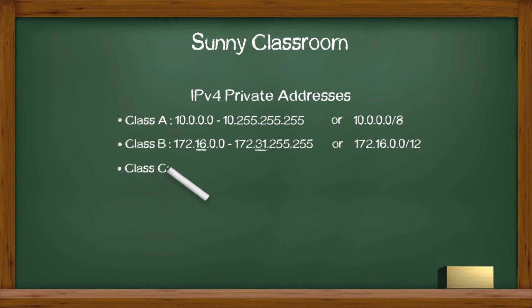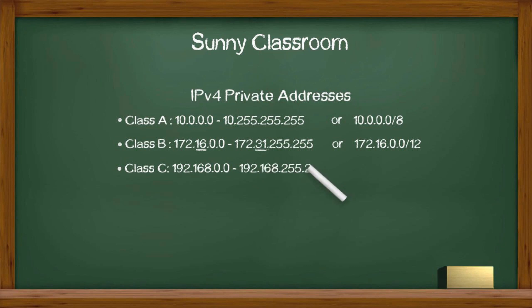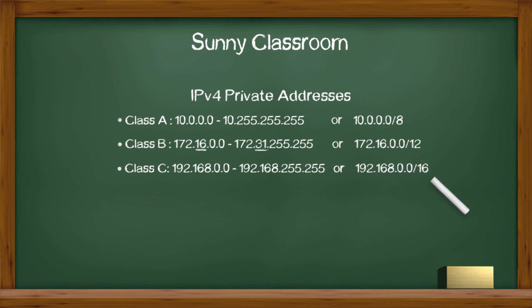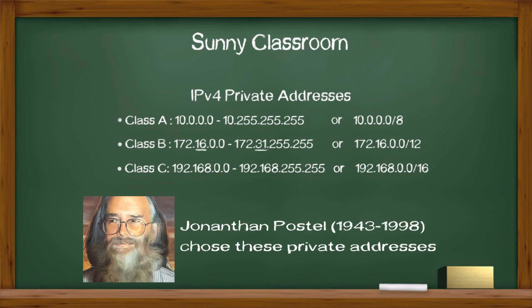Class C: 192.168.0.0 to 192.168.255.255, or 192.168.0.0/16. Why were these numbers chosen? A great question, but we don't know — and we will never know — because Jonathan Postel, the guy who chose these private IP addresses, died in 1998. He may have done this randomly, like by throwing dots or rolling dice, or whatever; we don't really know.